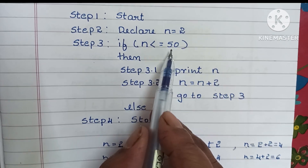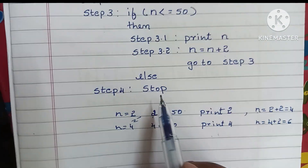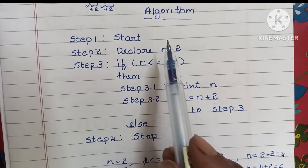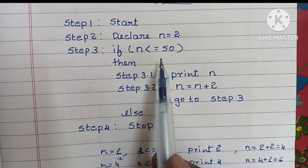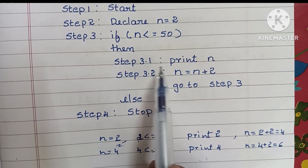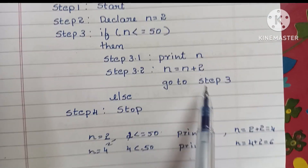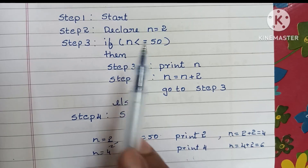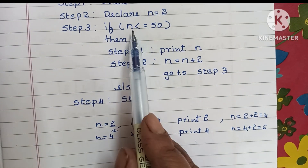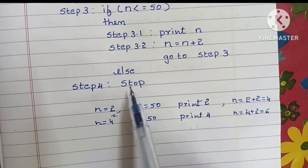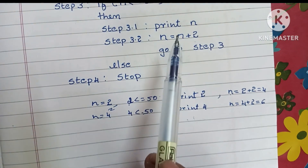When n value becomes greater than 50, it goes to the else condition and executes step 4 — the stop statement — which stops the algorithm. So to recap: Step 1 is start, Step 2 declares n equal to 2, Step 3 checks if n is less than or equal to 50, Step 3.1 prints n, Step 3.2 sets n equal to n plus 2, then go back to step 3. If the condition is false, go to Step 4 which is stop.